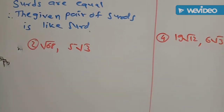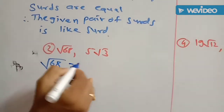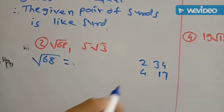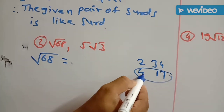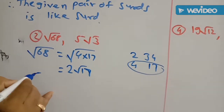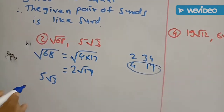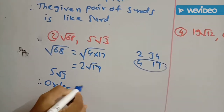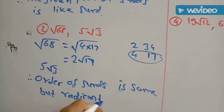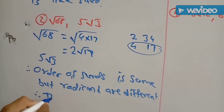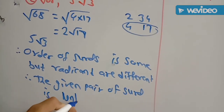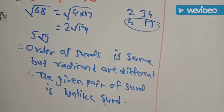Second pair: root of 68 and 5 root of 3. Root of 68: order is 2. Factorize — 68 equals 4 into 17. Square root of 4 is 2, giving 2 root of 17. The second SIRD is 5 root of 3. The order is the same (2), but the radicals are different (17 vs. 3). Therefore, the given pair of SIRDs is unlike SIRDs.